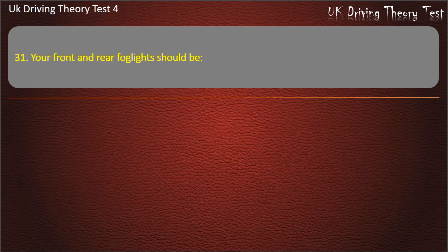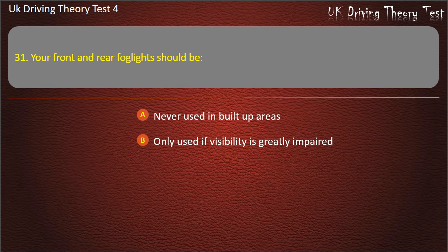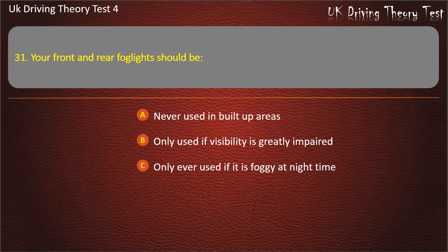Question 31. Your front and rear fog lights should be: never used in built-up areas; only used if visibility is greatly impaired; only ever used if it is foggy at night time; or never used in the daytime. Answer: Only used if visibility is greatly impaired.